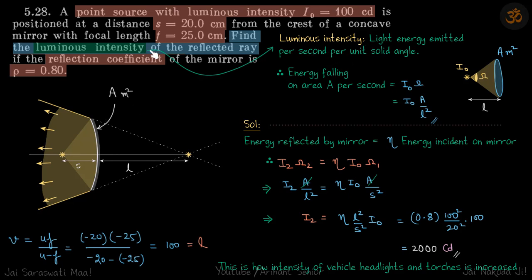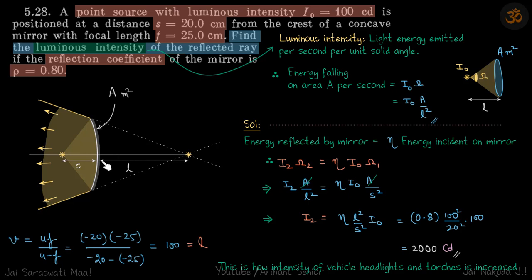We can work in per-second terms throughout since i-naught is already given per second. If 100 watts is falling, then 0.8 times 100 watts is getting reflected and appears to come from the image. That energy divided by the solid angle subtended gives the new intensity. To find omega, we need the area and l squared — we get the area from the initial source and l from the image position.